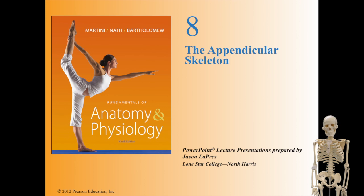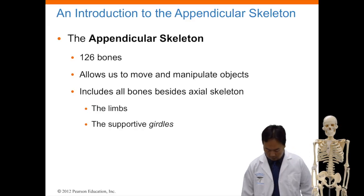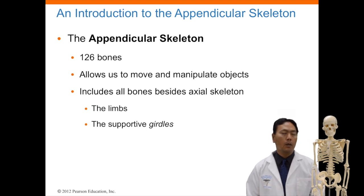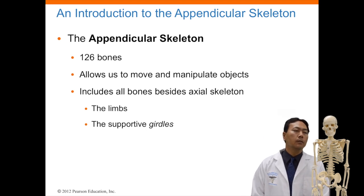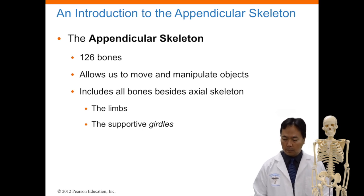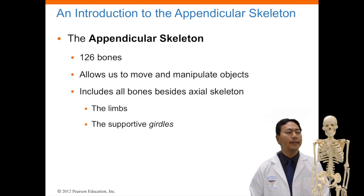This is Chapter 8, The Appendicular Skeleton. As we all know, there are 206 bones in the human body, 80 of which belong to the axial skeleton. The appendicular skeleton has 126 bones, which allows us to move and manipulate objects. It includes all the bones besides the axial skeleton, which include the limbs and your supportive girdle.